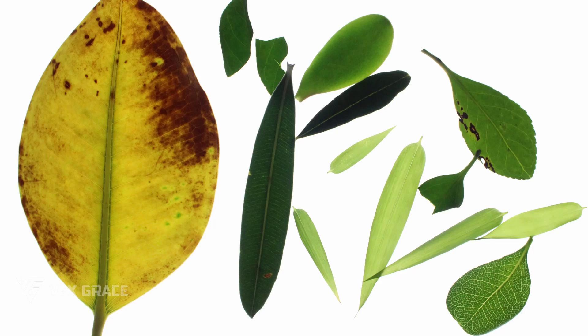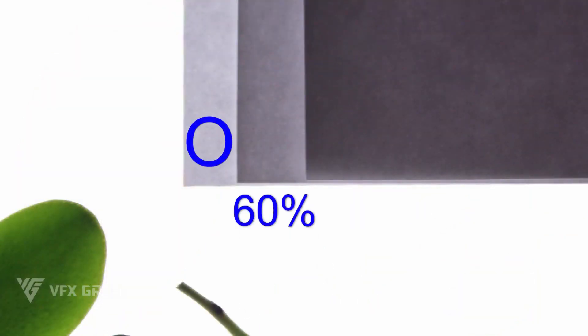So we need certain standards for photographing translucent things. Here is a quite simple way: we're using several sheets of white A4 paper, and we just make sure the intensity of light on the first one is 60%.